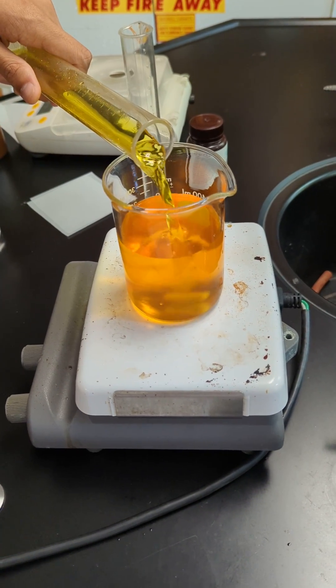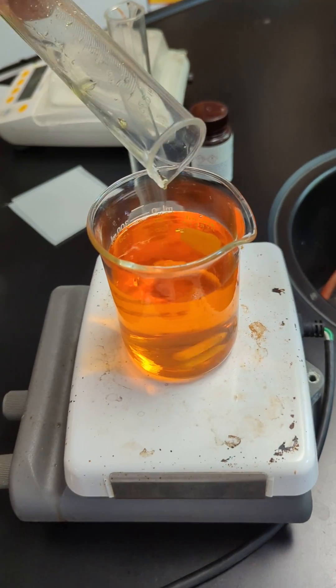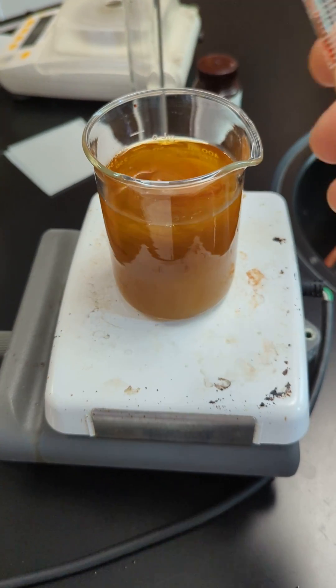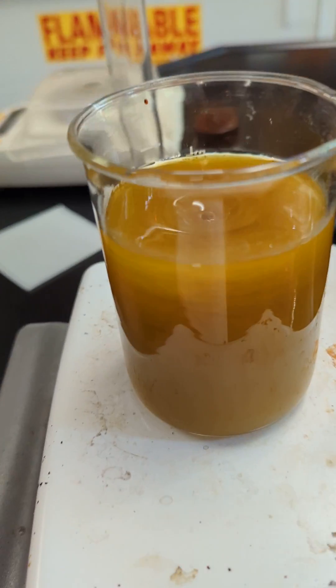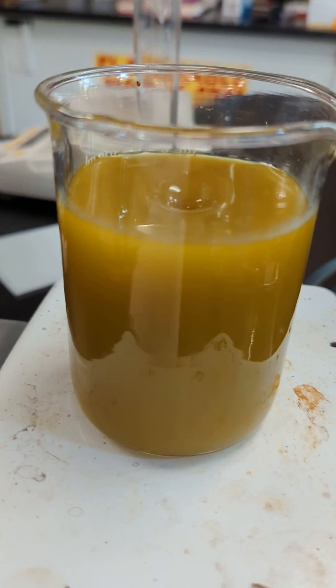So we're adding the cerium-4 solution to the solution that contains malonic acid, bromide, and bromate. And I'm going to add some of the ferroin indicator. Yeah, that was gross. I kind of have a feeling that wasn't supposed to happen.